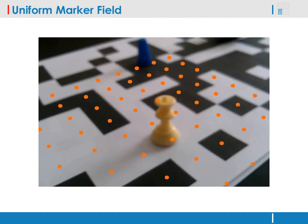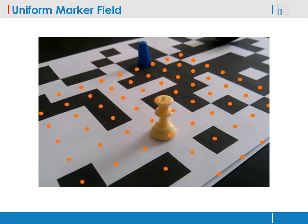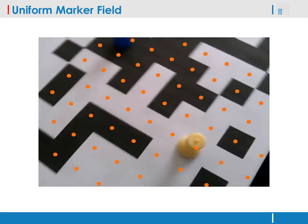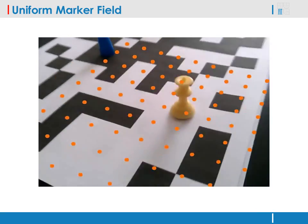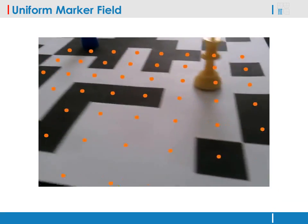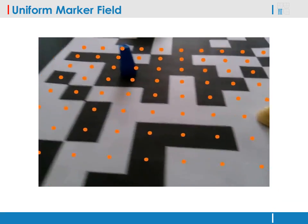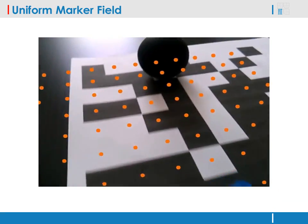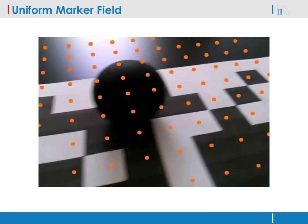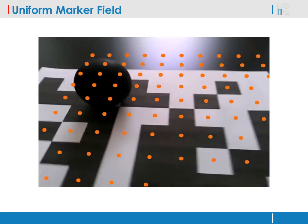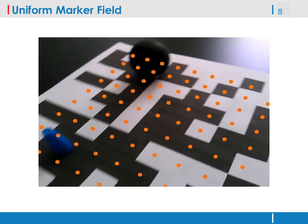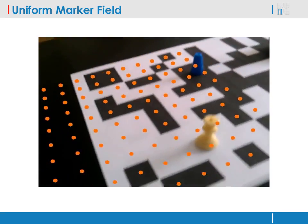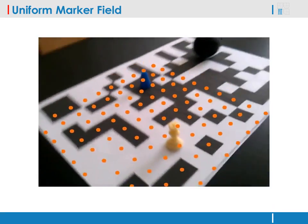In our paper, we are introducing the uniform marker fields. A marker field is a large planar or non-planar pattern which can be observed by a camera, and from seeing just a fraction of the pattern, the viewpoint can be computed.